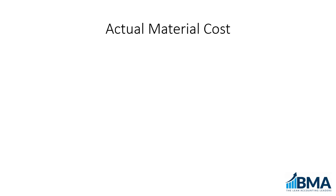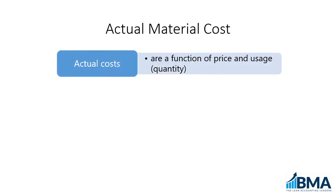Likewise, if you see more patients, you're going to consume more supplies. So, the actual cost of your material is a function of price and usage, or quantity. It's a simple equation: price times quantity equals total cost.